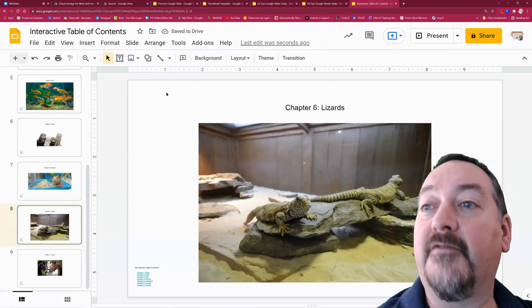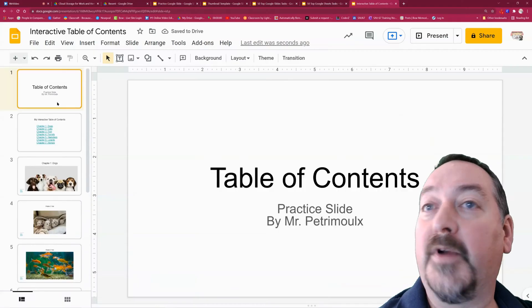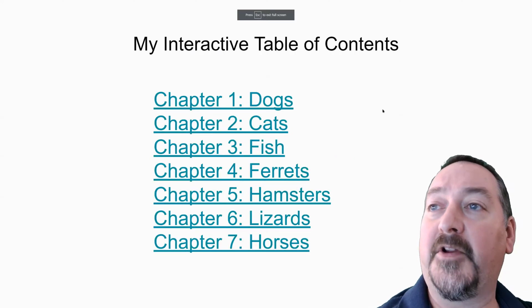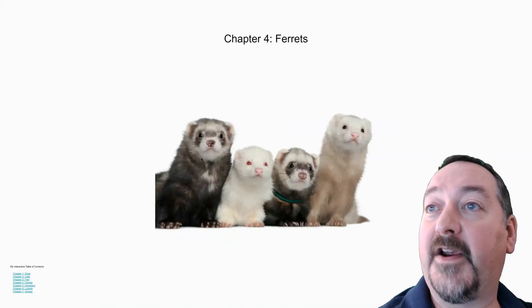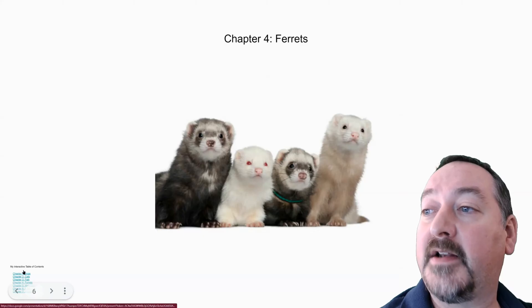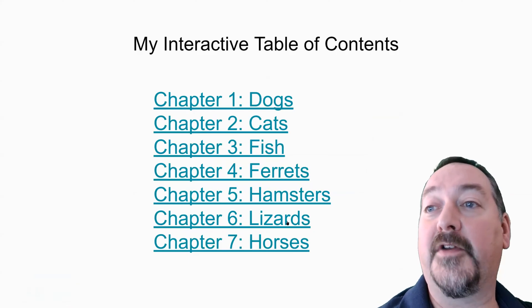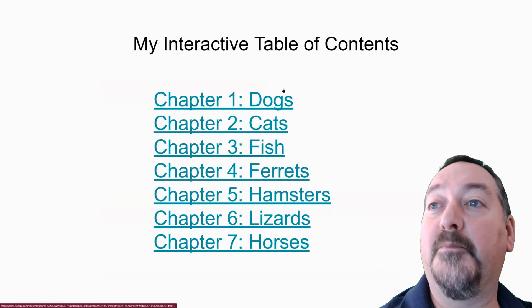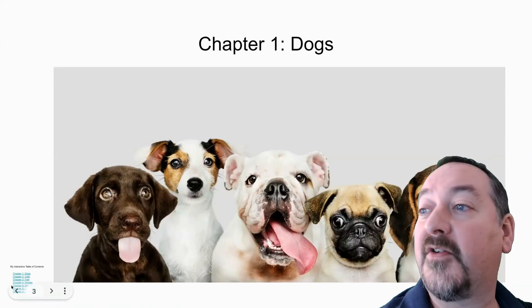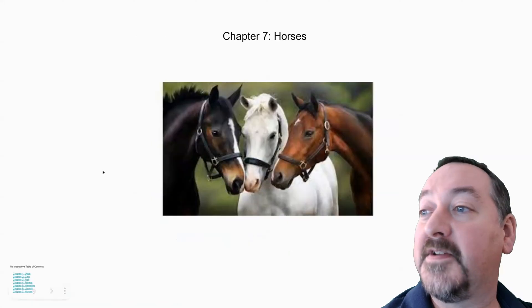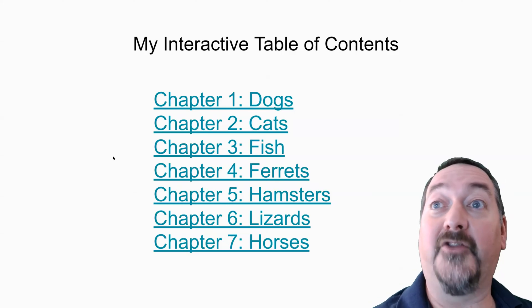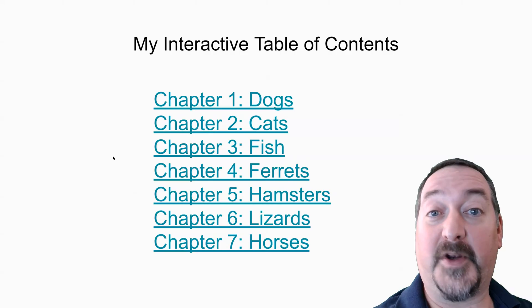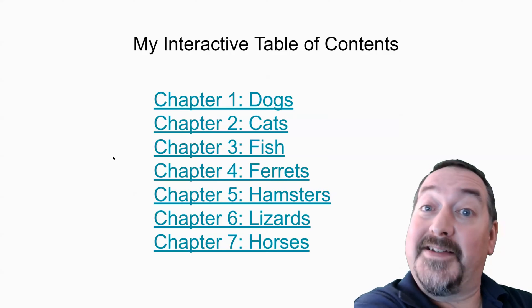Now we can go back and forth. Let's start by running our presentation again. I'm going to go to that table of contents and this time check on Ferrets. Here's my Ferrets chapter, and now I can click on the interactive table of contents and go back and forth. I can now go to the Lizards chapter and back. If somebody asks about Dogs, I can go to Dogs and back. And now I can go to Horses. Your table of contents is now interactive and totally useful in a presentation where you may have questions or want to skip around.